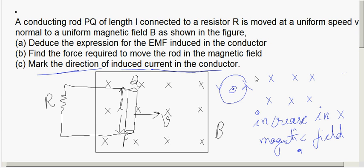Recalling from the last chapter: anti-clockwise current in a loop produces a dot magnetic field at the center. Therefore, the direction of the induced current is anti-clockwise.